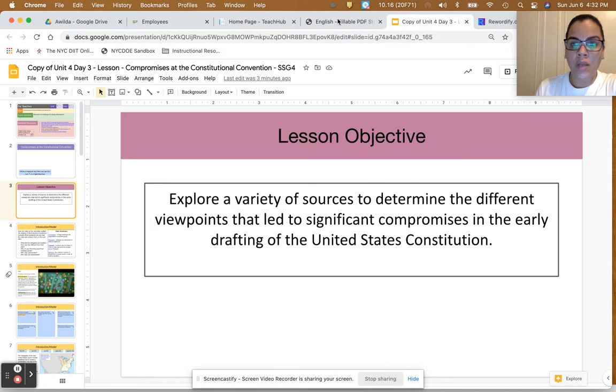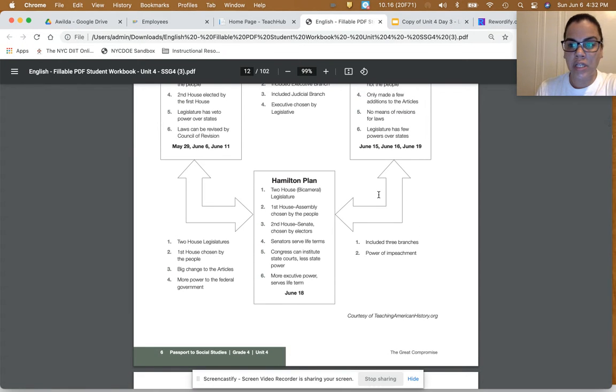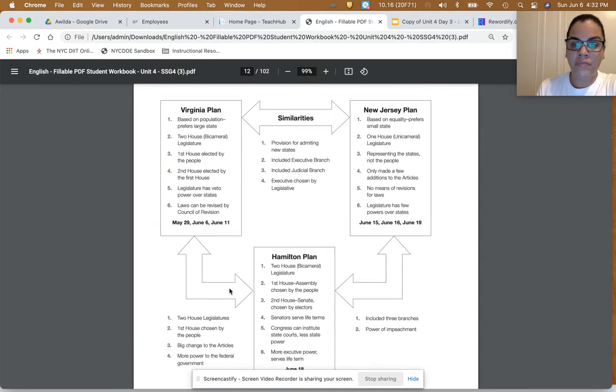Prior to this lesson, it would be helpful to assign students the Passport to Social Studies workbook page 6 in English and their home language, if that's applicable, because it gives them a summary of those different viewpoints, and it will give them access to the grade-level contents of the lesson and support their comprehension of the videos and sources in the lesson.